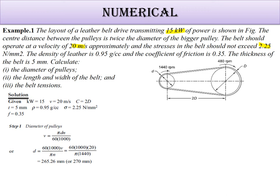For that, v equals pi d n by 60 times 10 to the power 3. We have v, n, and pi, so we can find the diameter. Small d equals 265.20 mm, take the round figure value as 270 mm. Based on this, we can find capital D also.